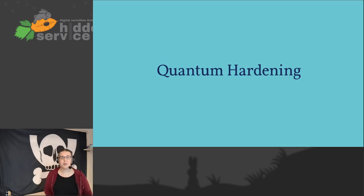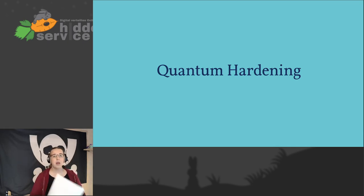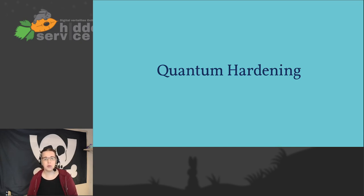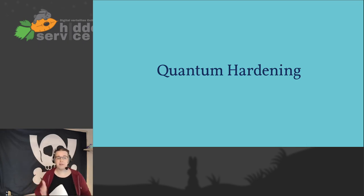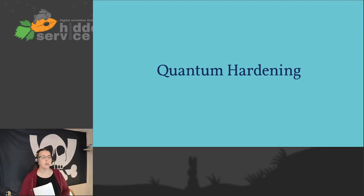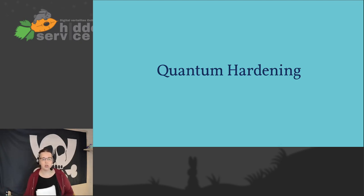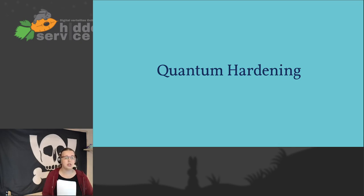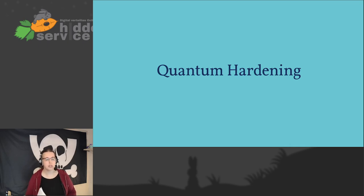This talk is about quantum hardening — it is not about quantum computing. Quantum hardening is the study of how to secure existing cryptographic protocols against attacks from quantum computers. Quantum computing is the study of how to use quantum effects to build computers, while quantum cryptography is about using quantum effects to build cryptographic systems. We're talking about the first: it runs on normal computers and involves no quantum calculations — just making sure our crypto doesn't break when quantum computers become practical.